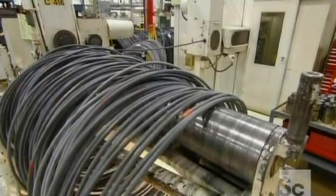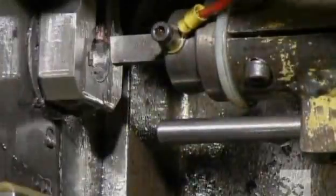They start with this coil of thick steel. It travels through a die which straightens it to a knife that slices it into short billets.